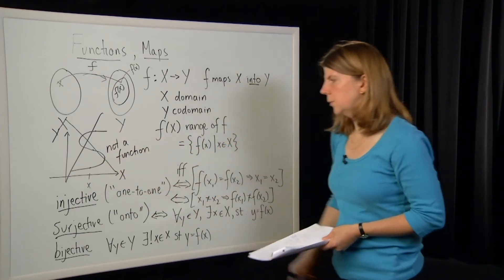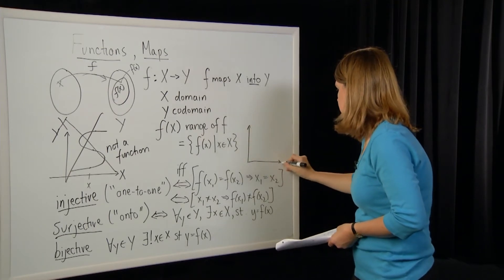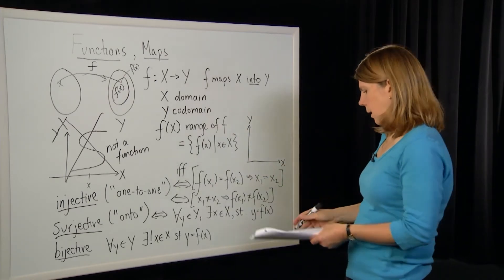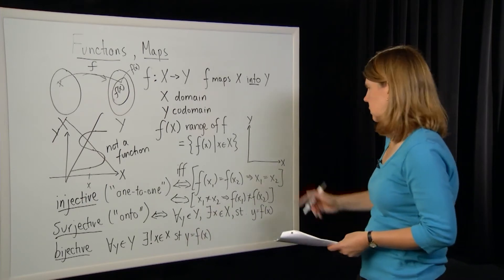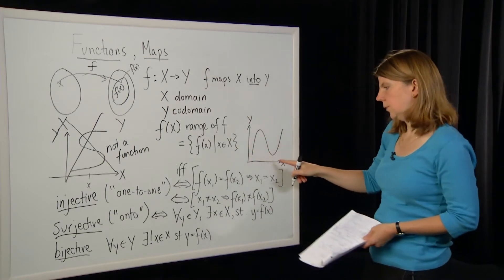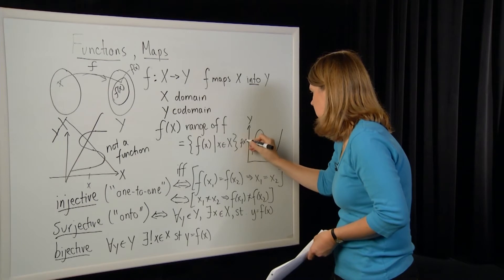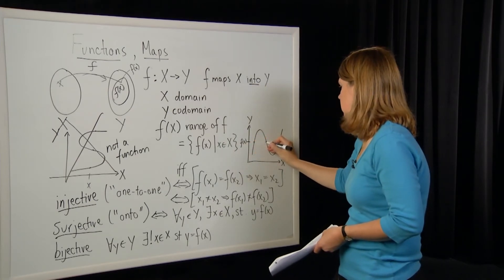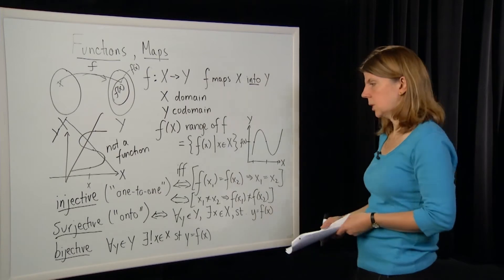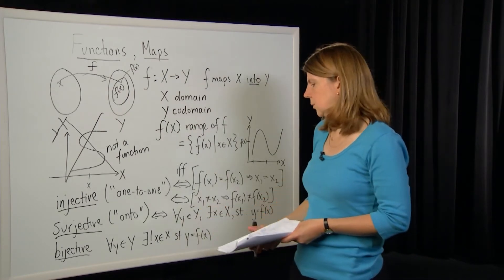Going back to our example: if we think about an injective function where the domain and codomain are the real line, a function which is not injective is like taking that S-curve and turning it on its side. It's not injective because for a particular value of F of x in the range, we have three values of x that the function could have come from. Surjective just means the range is equal to the codomain, and bijective if both hold.